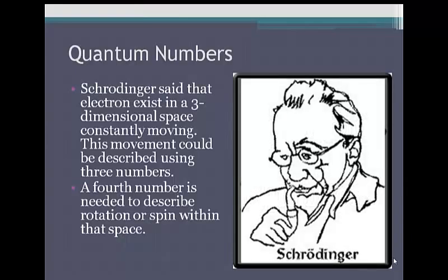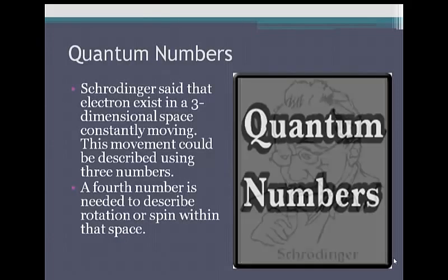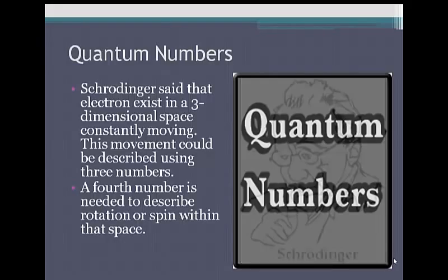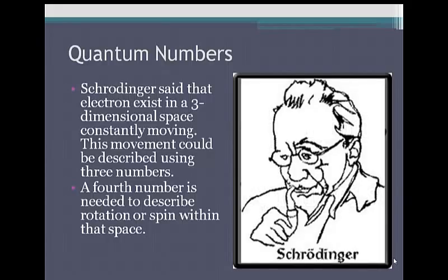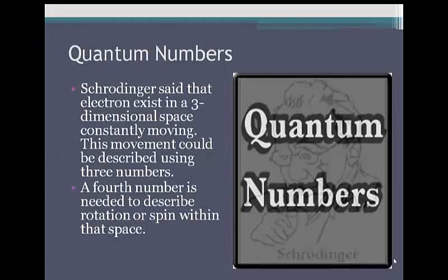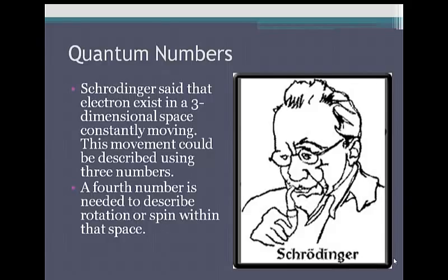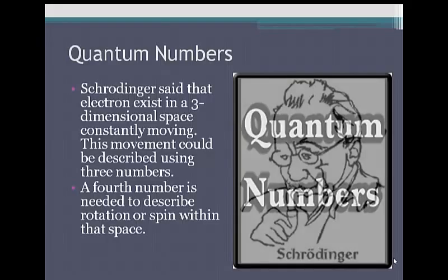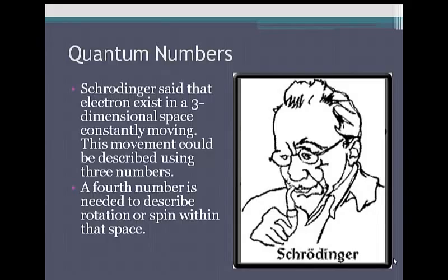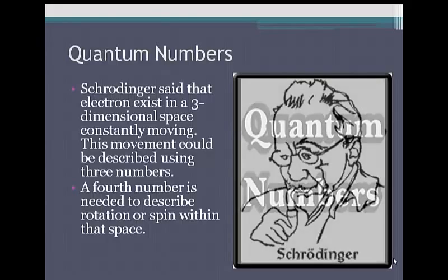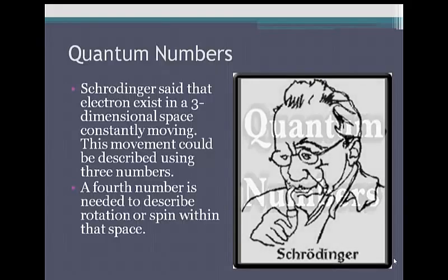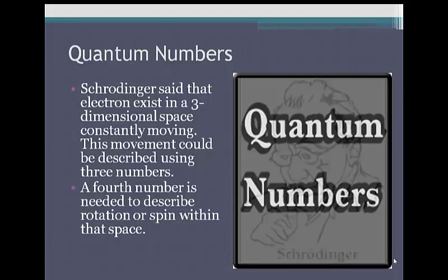What Schrodinger also theorized was the whole idea of quantum numbers. He said that electrons do exist in a three-dimensional space, but they're constantly moving. In order to describe the movement, we need to have a quantum number, and there are actually four. In order to describe where an electron is, or the movement of an electron, at any single point in time, we need four quantum numbers. The first three describe where that electron is in the three-dimensional space, and the fourth describes the rotation, or spin, of that electron within that space.